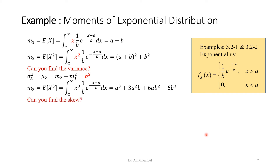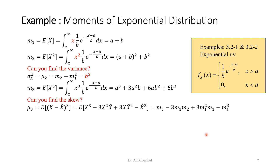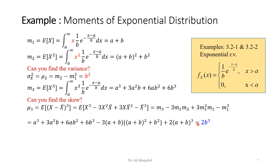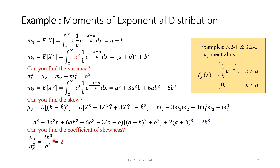We can also find mu3, the skewness, in terms of moments about the origin and evaluate it — that's a good exercise to practice. To find the skewness coefficient for the exponential distribution: mu3 divided by sigma_x cubed gives 2b³ divided by b³, which equals 2. So the exponential distribution always has a constant skewness coefficient of 2, independent of a or b.